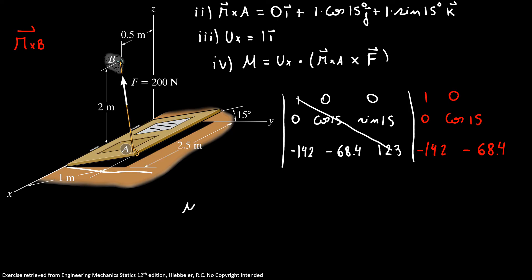So here for our analysis we have moment is equal to 123 cosine of 15 degrees minus minus 68.4 sine of 15 degrees.